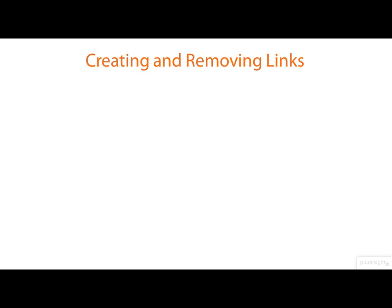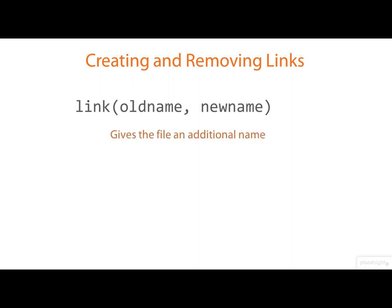You can create an additional link to a file with the link system call. It needs the existing name and a new name, and it gives the file an additional name. It's the system call that lies behind the ln command that you're probably familiar with. And you can remove a link again with unlink — the system call that lies behind the rm command.